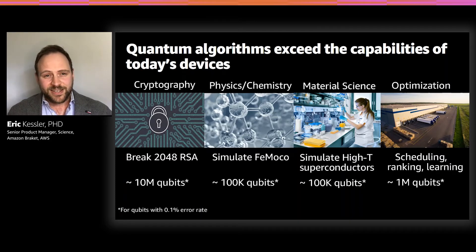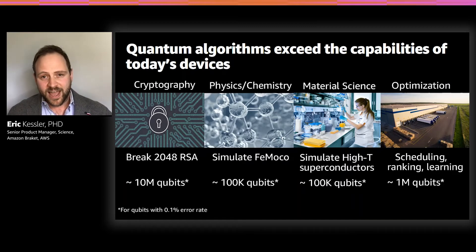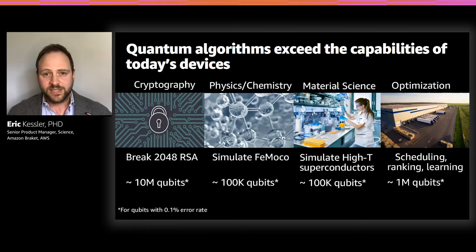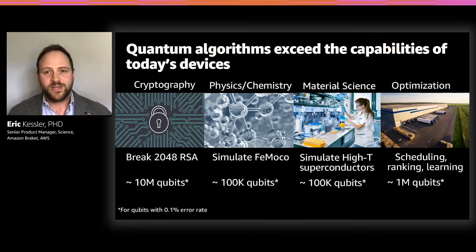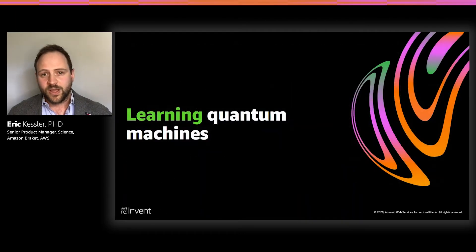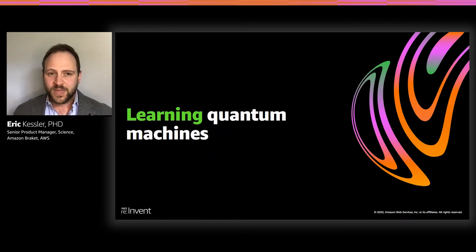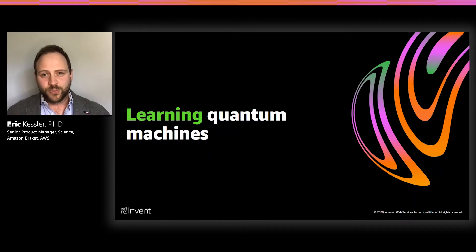But of course, these applications come with one big caveat. To unlock these high-value applications, we need hundreds of thousands or even millions of high-quality qubits, as you can see by these rough estimates on this slide. And this is far beyond the capabilities of today's devices. So what can we do in the meantime? The most promising approach to near-term applications of quantum computing, it turns out, are what is called hybrid algorithms.